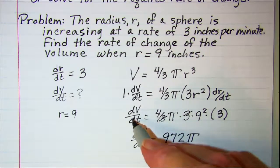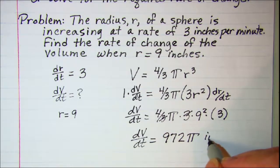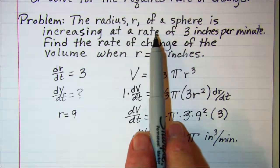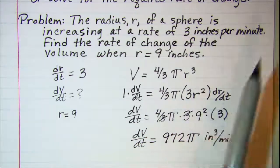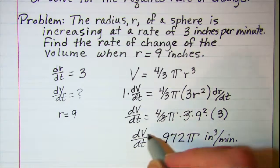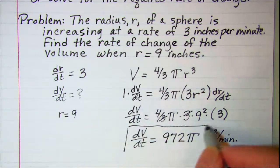And since it's volume, it's going to be cubic inches per minute. We know it's per minute because our radius was changing at a rate of inches per minute. So this is the rate of change of our volume.